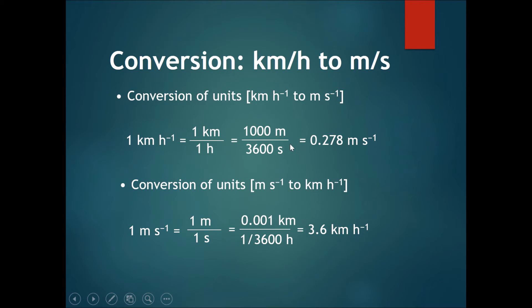However, in paper one or a question that does not require working, you can convert it using a simple trick. From km per hour into meters per second, just divide the number by 3.6. And if you have meters per second, multiply by 3.6 to convert to km per hour.